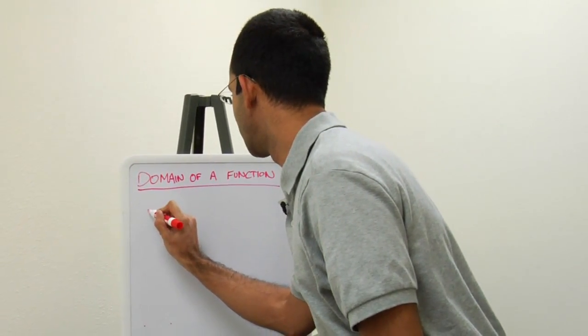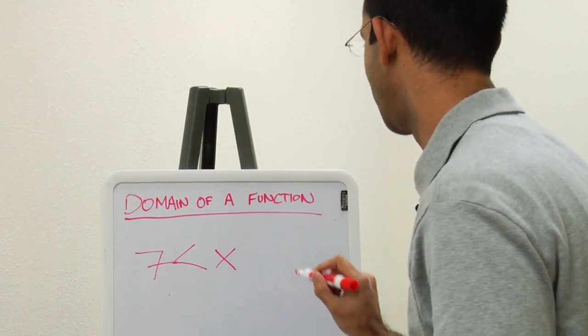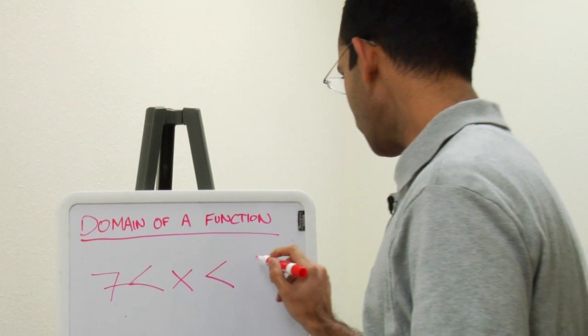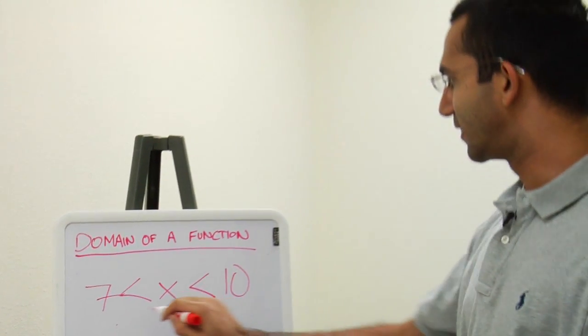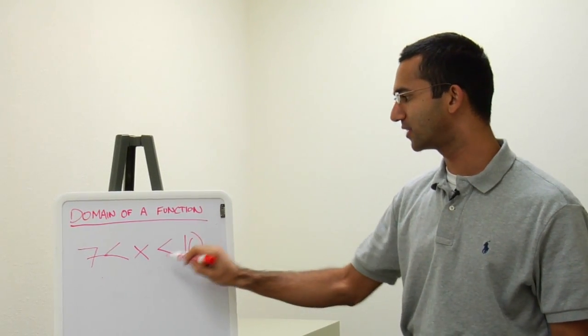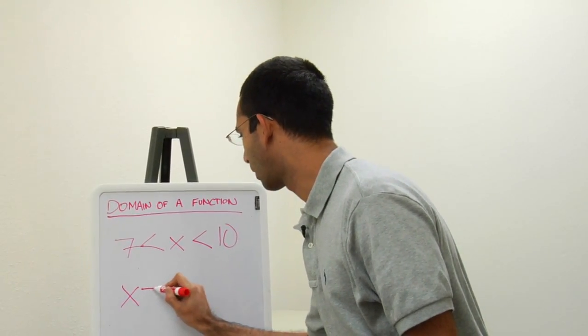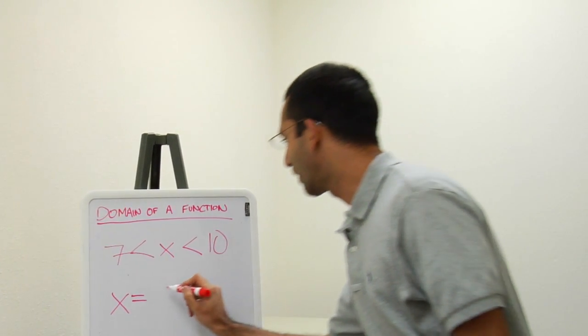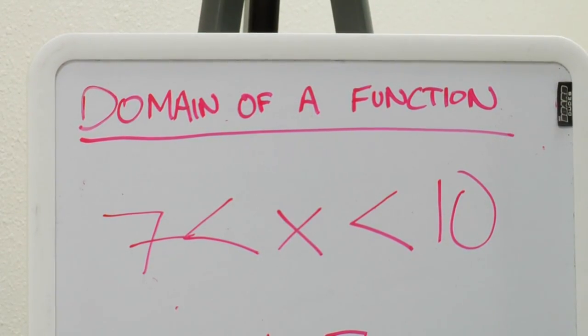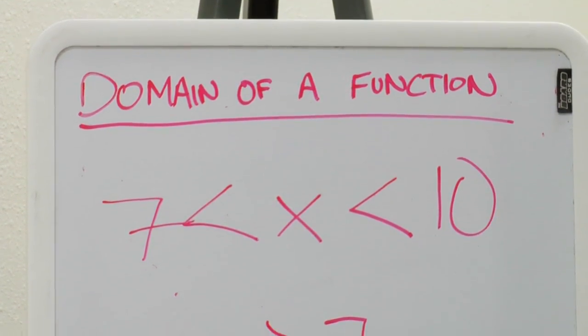Here we have 7 which is less than x which has to be less than 10. So in this equation here we know that the domain of this function is x has to equal anything greater than 7 and any number less than 10 to make this equation true for the domain of this function.